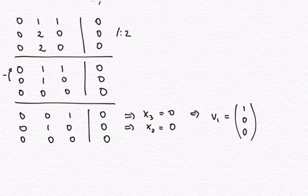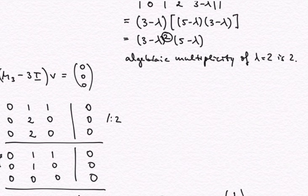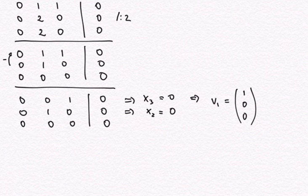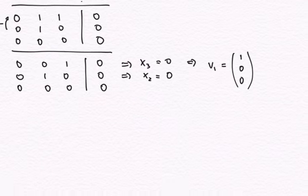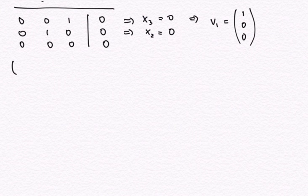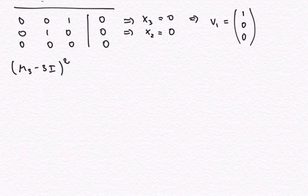So where is the second eigenvector? Remember, we have an algebraic multiplicity of 2, so we would expect two linearly independent vectors to populate our P matrix for the eigenvalue decomposition — but that is not the case; there is only one eigenvector here. I'll show you how to solve this situation by giving you the recipe. What we have to do is find another vector called a generalized eigenvector, by solving the system (M3 minus 3I) squared times a vector equals the zero vector in R3.